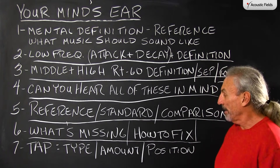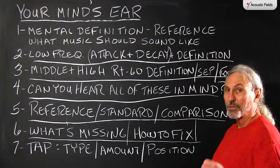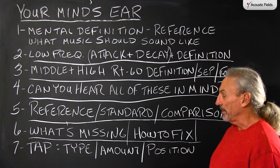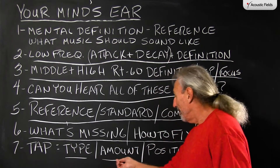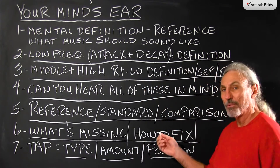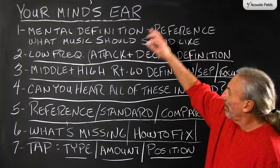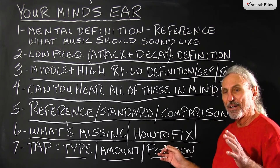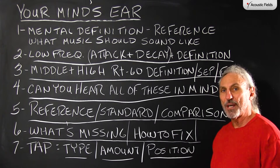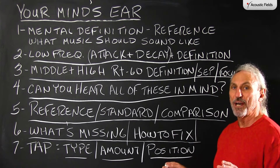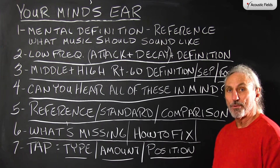You can look at how to fix it, and we have different ways we can do that. Two types of treatment obviously — absorption and diffusion. And then we can start determining the type, amount, and position of that treatment. We'll do a video on that later. But the goal here is to get a mental vision, a picture of good quality sound, a reference sound that you know of, and then carry that with you when you go into rooms.